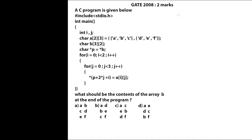This question was asked in 2008. Let me number the lines: line 1, line 2, line 3, line 4, line 5, line 6, line 7. They are asking what should be the content of the array P at the end of the program. Now let us try to solve this question.